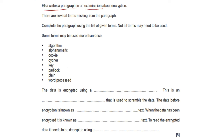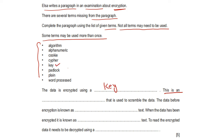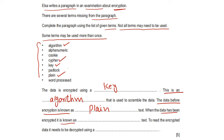Elsa writes a paragraph about encryption; complete it using the given terms. The data is encrypted using a key. This is an algorithm used to scramble data. The data before encryption is known as plain text. When the data has been encrypted, it is known as ciphertext. To read the encrypted data, it needs to be decrypted using a key.